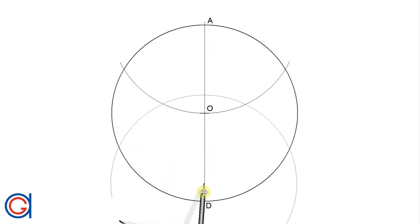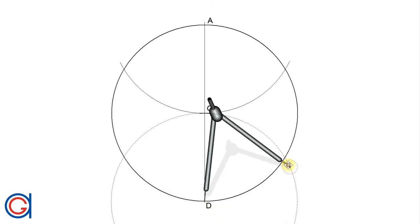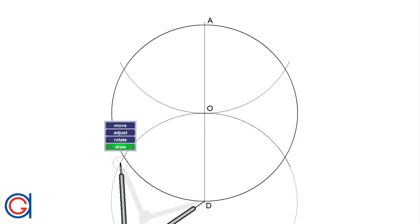And now we are going to repeat this process, this time setting our compass on point D and with the same radius we scribe another arc until it cuts our circle at two more points.